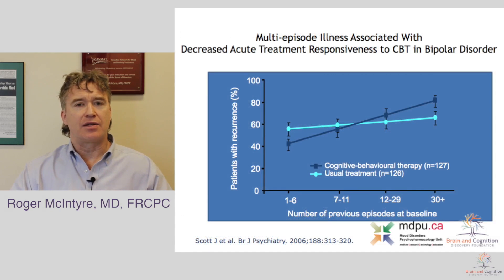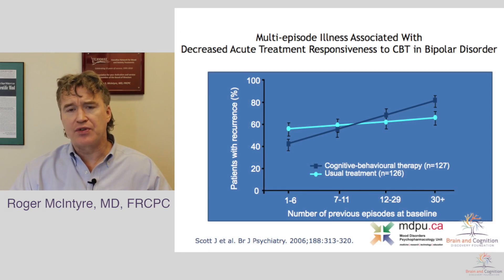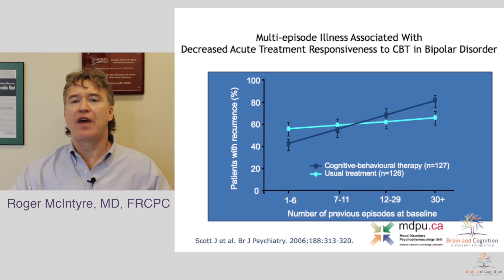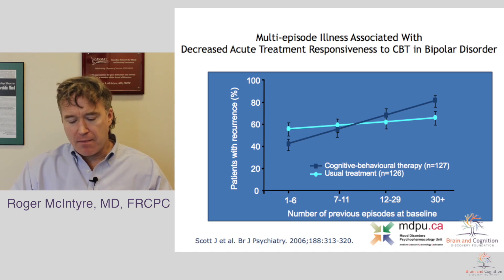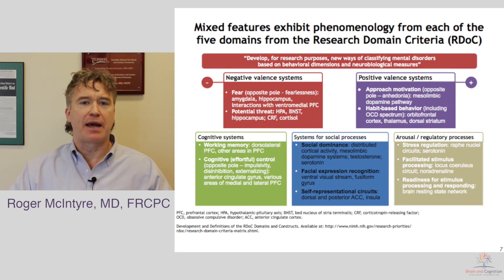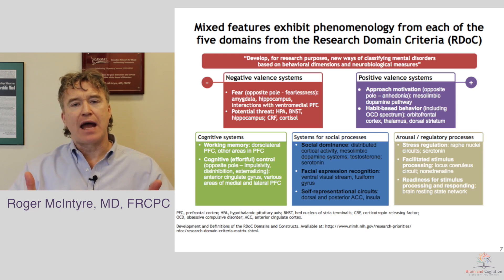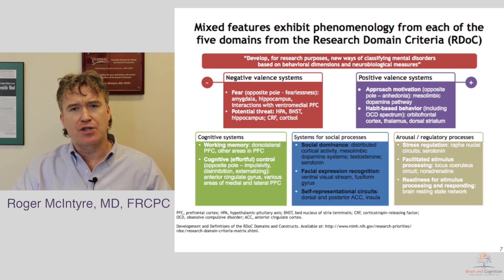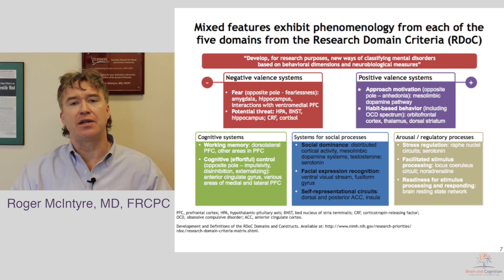This decreased responsiveness seen with treatments is not delimited to pharmacotherapy — we also see it with psychotherapy in individuals who've had multiple episodes of mood disorders. This reminds us how important it is to make timely, early, and accurate detection of both conditions. We believe that in many people who have major depressive disorder or bipolar disorder, there's a complex confluence of developmental as well as degenerative aspects occurring, involving both risk and resiliency against that risk.